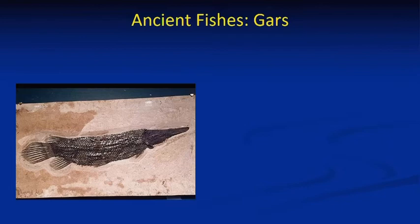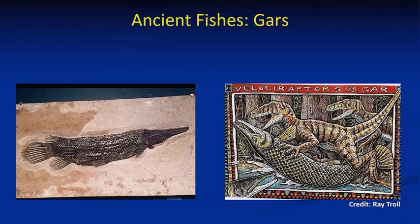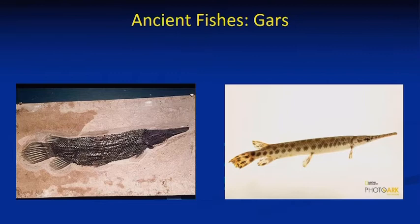Within that group we've got gars — another group of ancient fishes. Here's a fossil gar. Gars have been around since about the late Jurassic period, 157 million years ago. An illustration by Ray Troll shows gar versus velociraptor — it could happen. They've got ganoid scales made up of something like tooth enamel — super tough. Some indigenous peoples made arrowheads out of the scales. A fossil gar and a spotted gar today look basically the same. They found a way to survive.